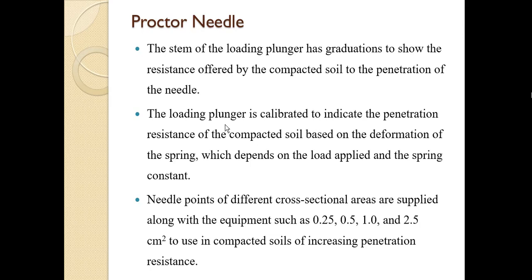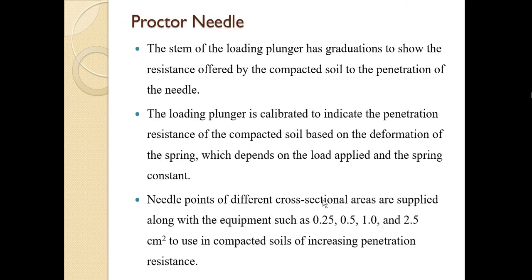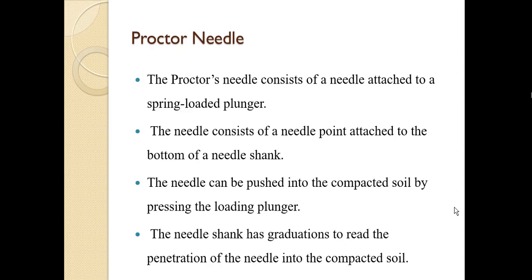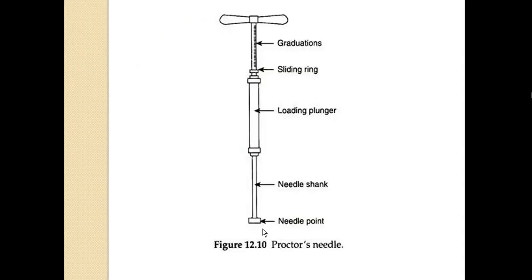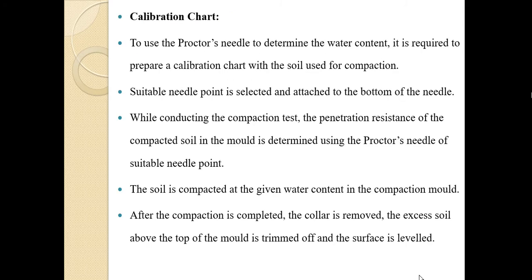The loading plunger is calibrated to indicate the penetration resistance of the compacted soil based on the deformation of the spring, which depends on the load applied and the spring constant. Needle points of different cross-sectional areas are supplied with the equipment, such as 0.25, 0.5, and 2.5 cm², to use in compacted soil of increasing penetration resistance. For clay soil the area will be more than that of sand, and we change the needle based on the type of soil.